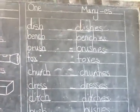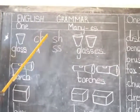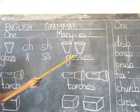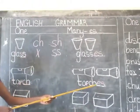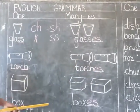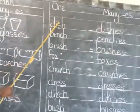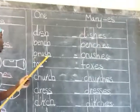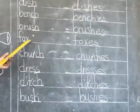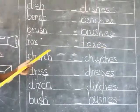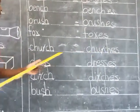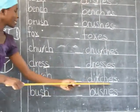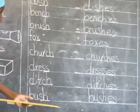Let's read very fast what we've been learning. Remember, sounds must end with CH, SH, S, or double S. Let's start reading: glass, glasses. Torch, torches. Box, boxes. Dish, dishes. Bench, benches. Brush, brushes. Fox, foxes. Church, churches. Dress, dresses. Ditch, ditches. And finally, bush, bushes.